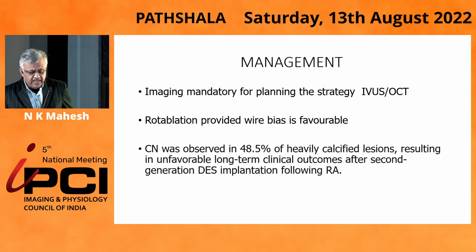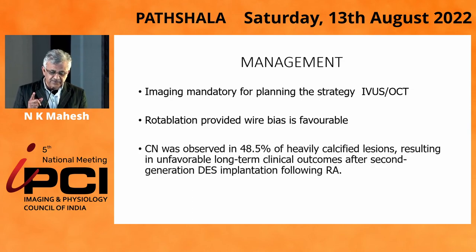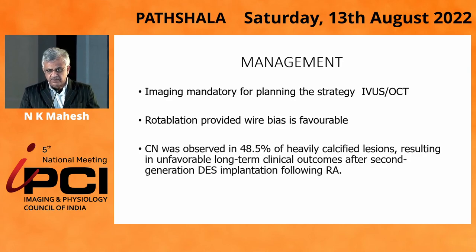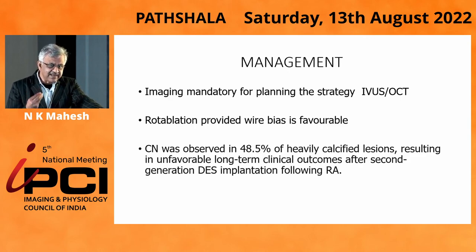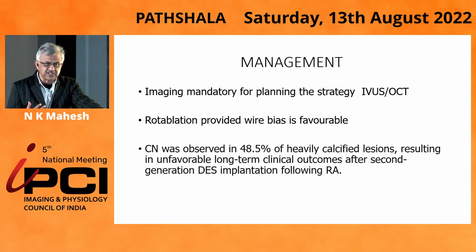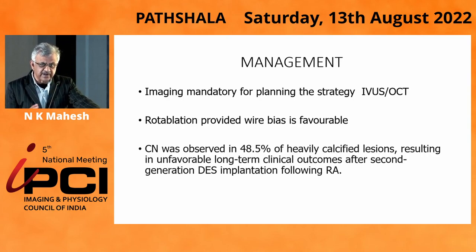Imaging is mandatory in planning strategy, whether it's IVUS or OCT — especially in acute coronary syndromes when you have calcific nodules, you should not take it for granted. Rotorablation is a good strategy, provided you have a favorable wire bias and can shave off some of the nodule. However, as Dr. Gary Mintz noted, however well you treat a calcified nodule, it is a malignant form of coronary artery disease, and device failure rates in the first five years are phenomenal — you will find calcium inside the stent, with reocclusion and ISR occurring.